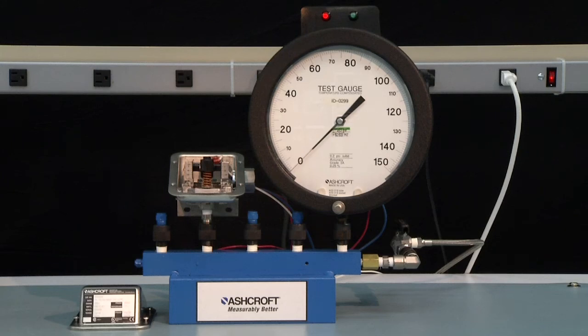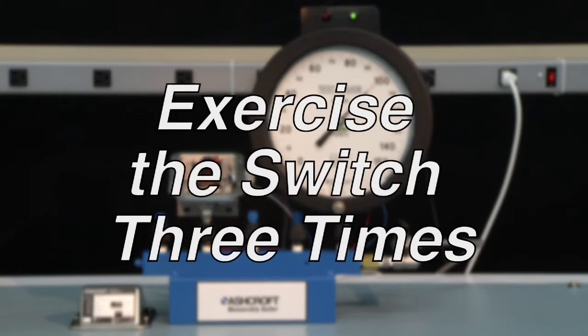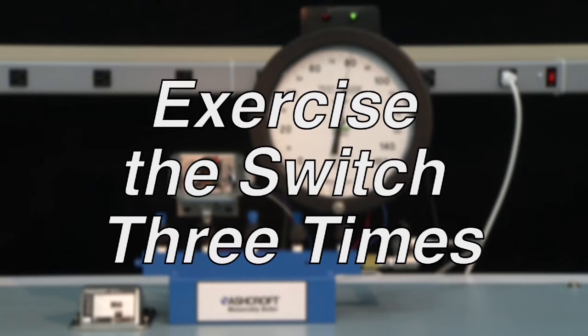The first step of calibration is to exercise the switch to make sure it is operating correctly. To exercise a switch, start from zero PSI and increase to full range of the switch. In this case 100 PSI and then return back to zero. This should be done three times.